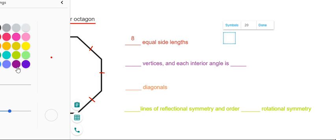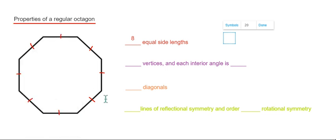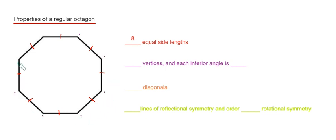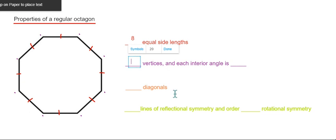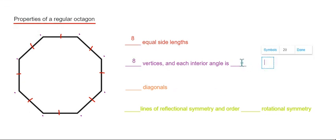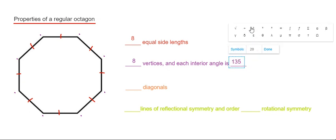So let's count the number of vertices then next. So we have one, two, three, four, five, six, seven, eight. So we have eight vertices and the size of each vertex is 135 degrees.